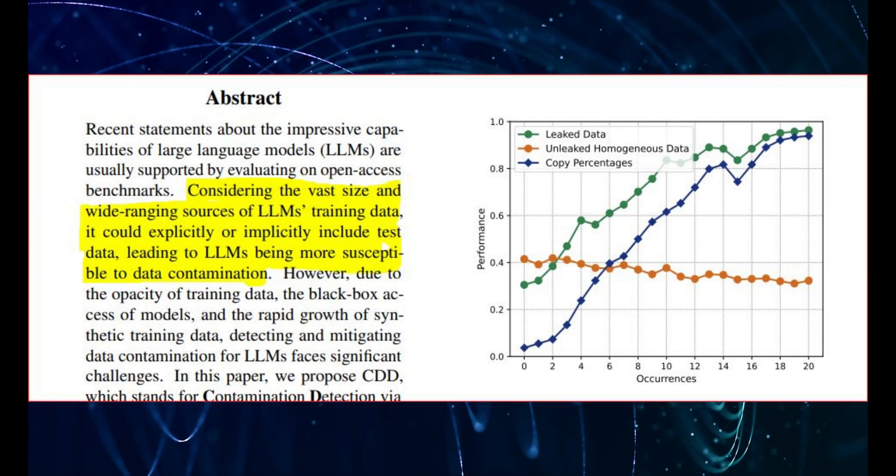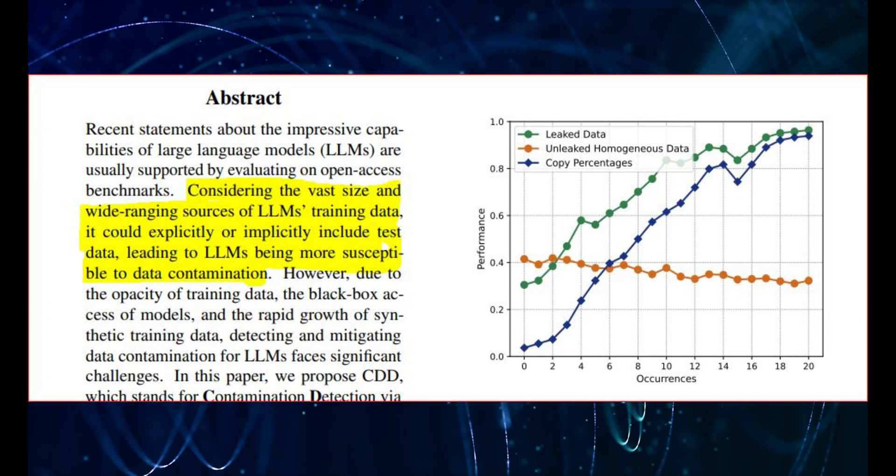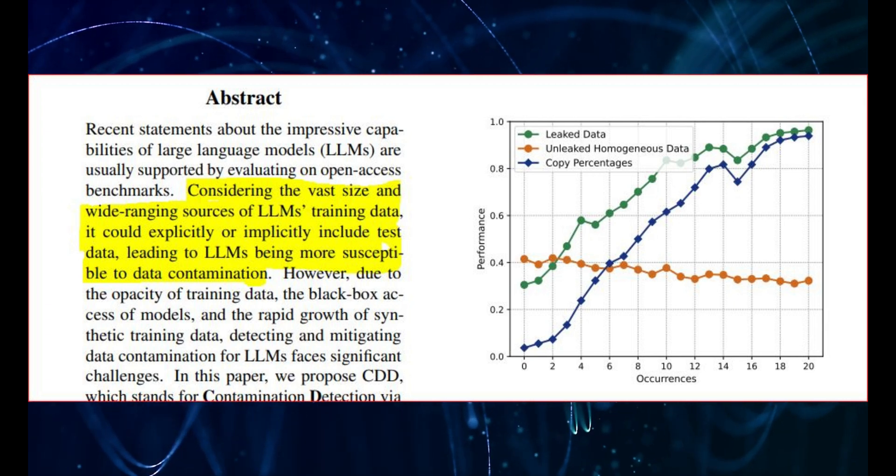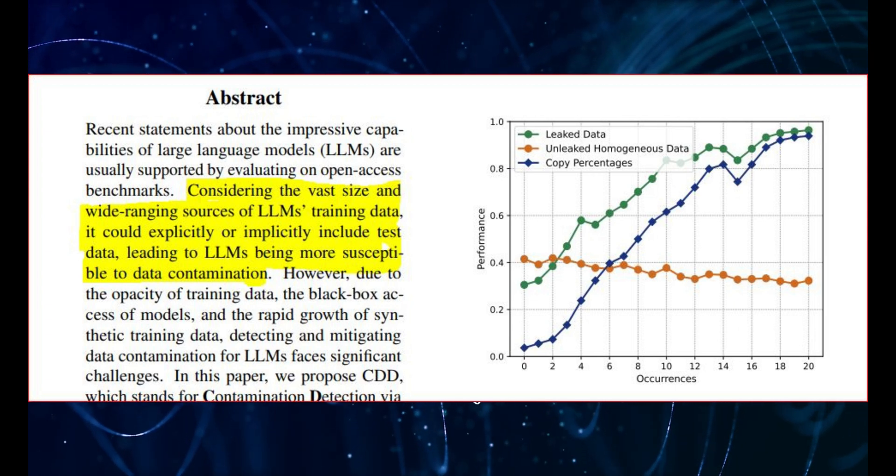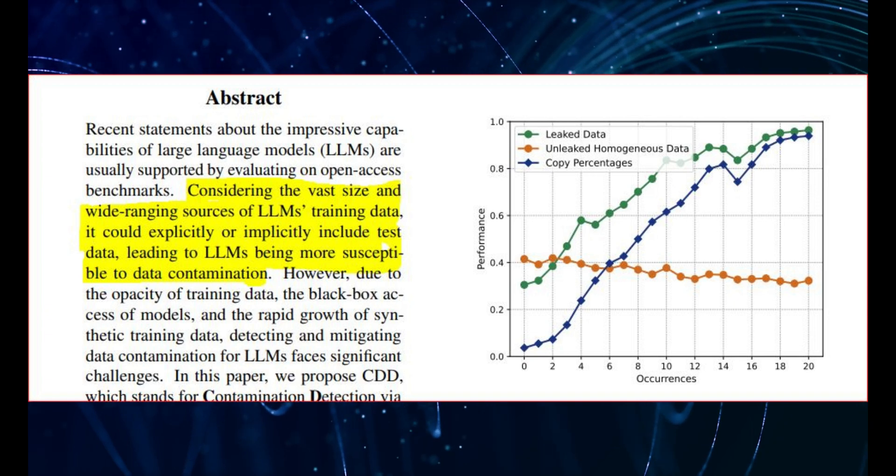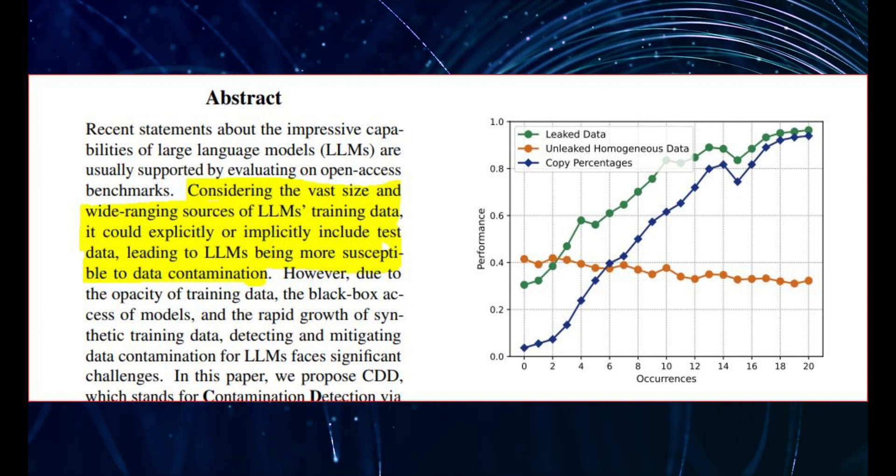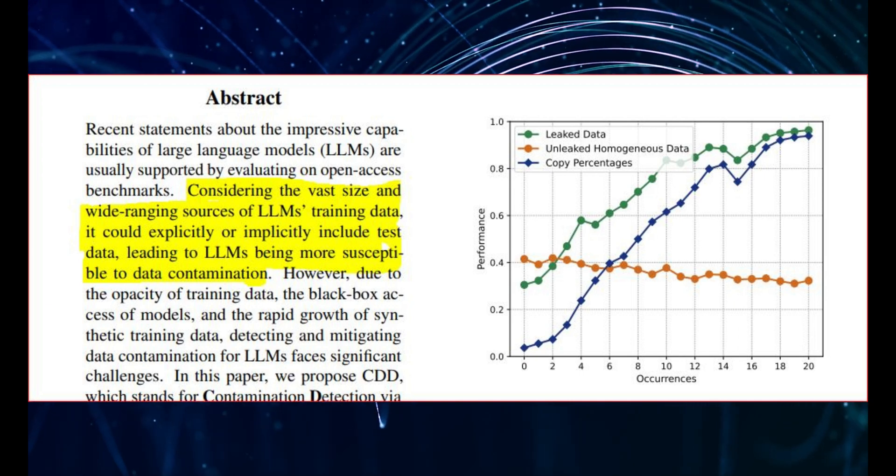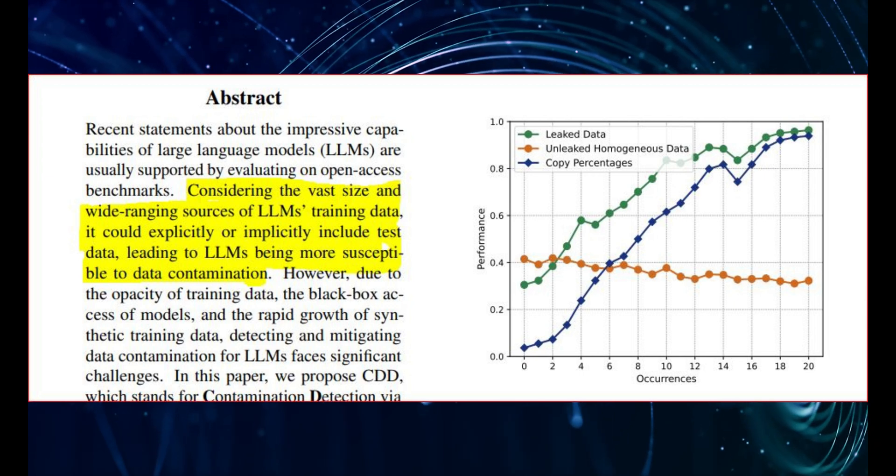Data contamination basically means that the data we use to train these models, you know, more parameters, more data, that some of that data, unfortunately, from the test sets and the answers, has slipped into the training data. So, the model essentially remembers what it was trained on, and isn't actually getting smarter. It's just regurgitating. And then there's pattern recognition. How much of this improvement is just the model recognizing patterns in the questions, and spitting out the answers it's seen before?